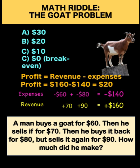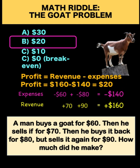Subtracting revenue minus expenses gives him a profit of $20. So the answer to this riddle is $20. Now, why are there so many people answering $30, $10, or zero? Let's analyze their thinking process — how they arrive at those numbers.